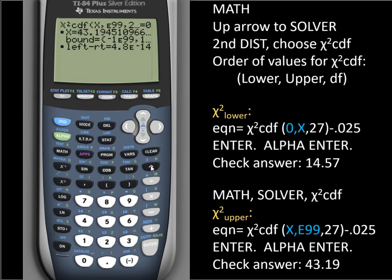And that's how we use the calculator to get an upper and lower critical value using solver and chi-square CDF when we have a two-tailed test or a confidence interval.